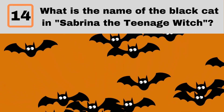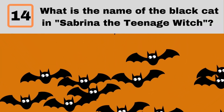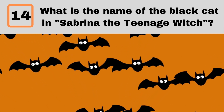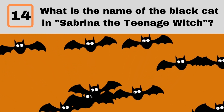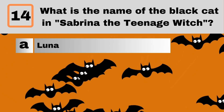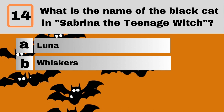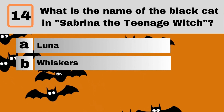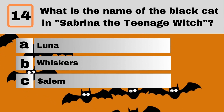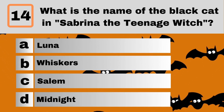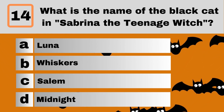Question 14. What is the name of the black cat in Sabrina the Teenage Witch? A. Luna. B. Whiskers. C. Salem. D. Midnight.